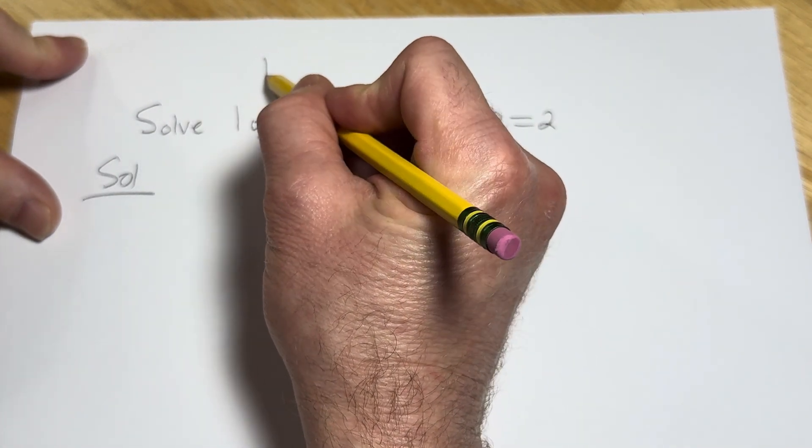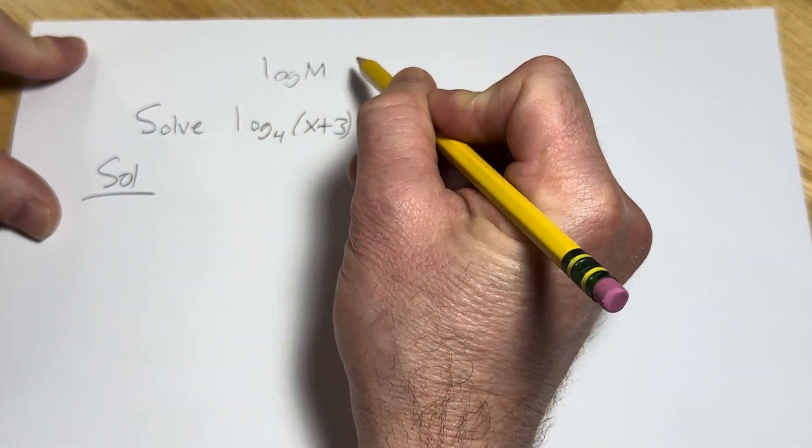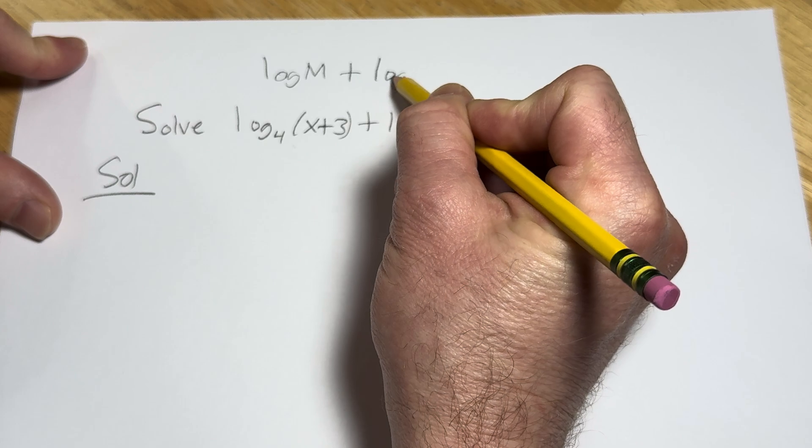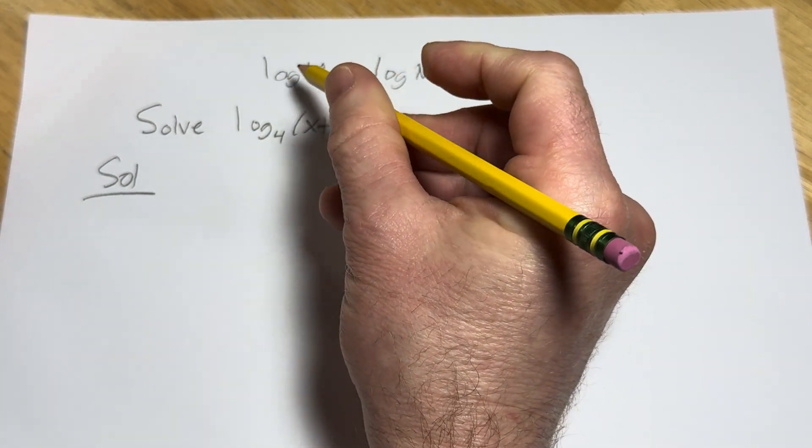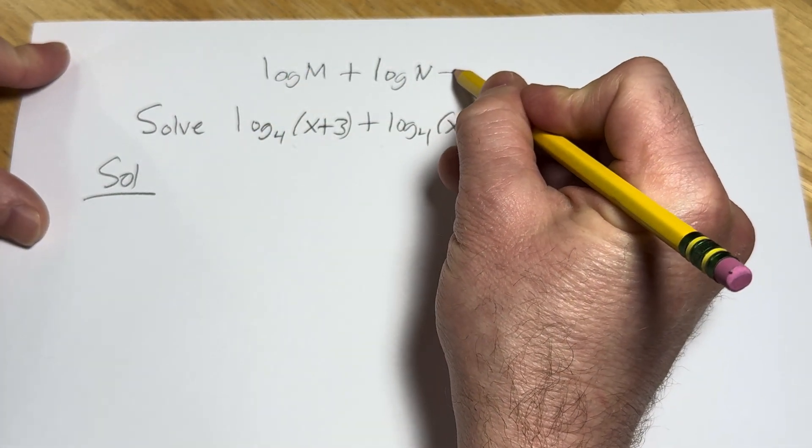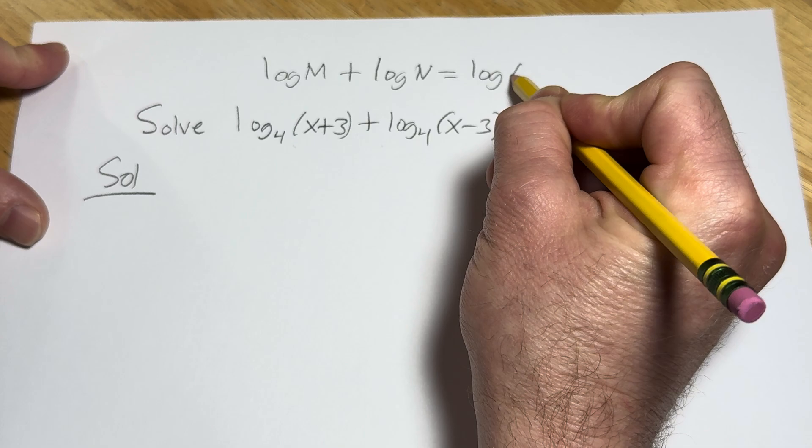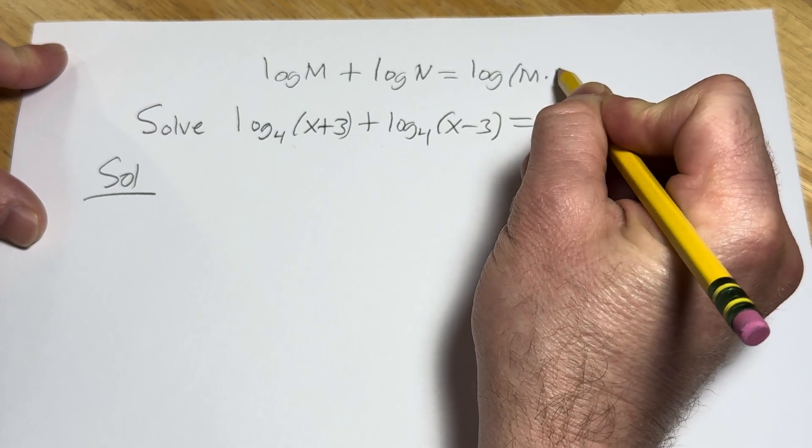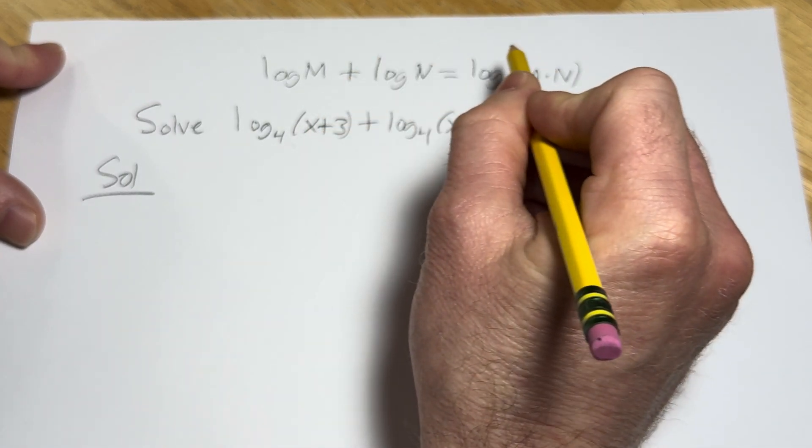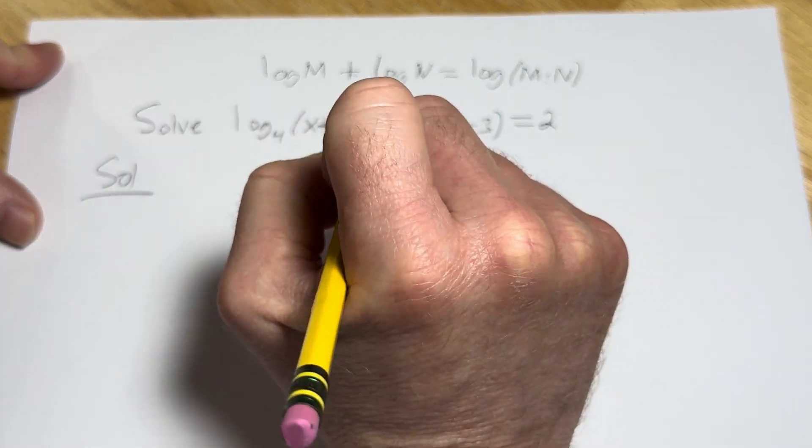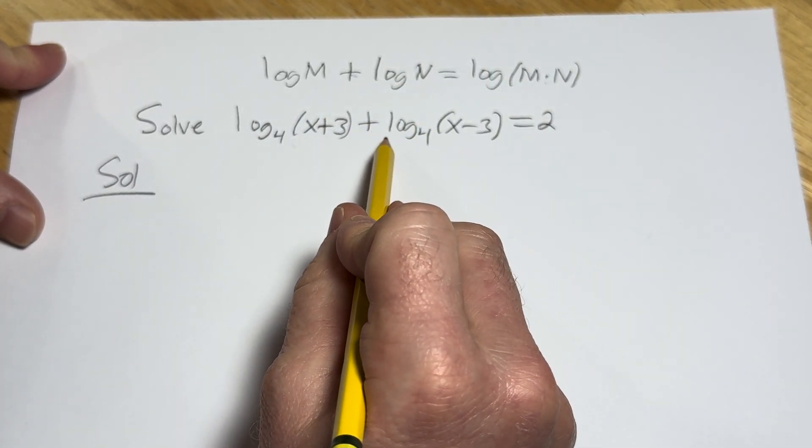The product rule for logs says if you have the log of m plus the log of n, and the base doesn't matter here so I just left it as log, this is equal to the log of m times n. So the addition turns into multiplication. Okay, so let's go ahead and apply that here to this problem.